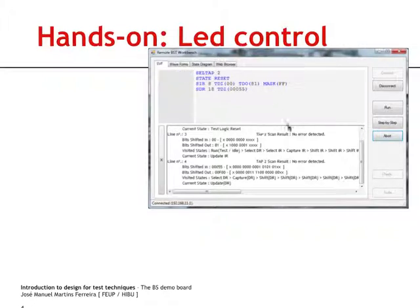Our application also offers a window where the execution of each operation is shown in terms of what bits are shifted in and what bits are shifted out from the board. The other tabs enable us to see the waveforms present in the test access port pins. Besides a small web browser, we also have the possibility of looking at the state diagrams corresponding to the two test access ports in our board.